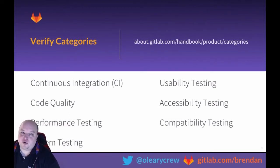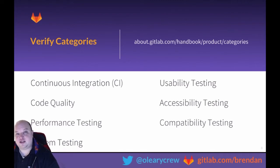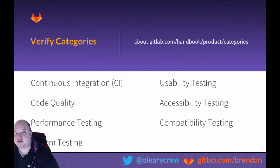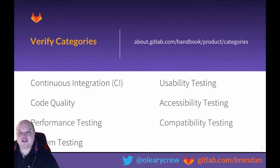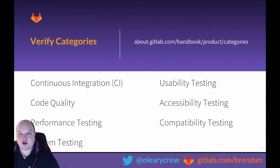Usability testing is obviously very important for our users that are deploying software to their customers. This allows you to work seamlessly within one application to not only review the code that's being changed but also review how that's going to impact the usability of the system. Accessibility testing goes beyond compliance needs and also applies to GitLab itself — our UX team is focused on making sure that with every release of GitLab we're making it more accessible and not causing issues for anyone that wants to contribute.